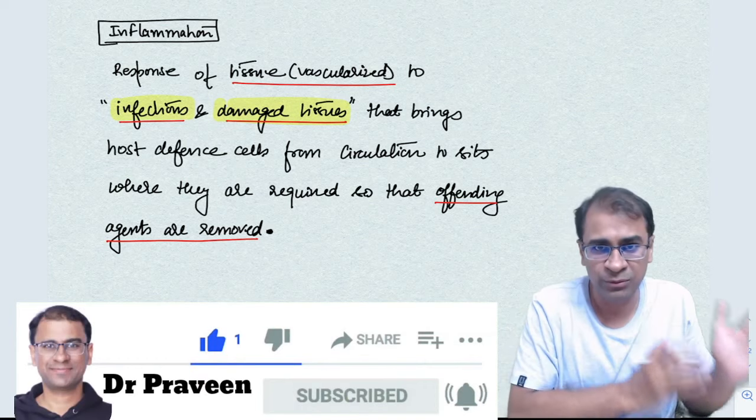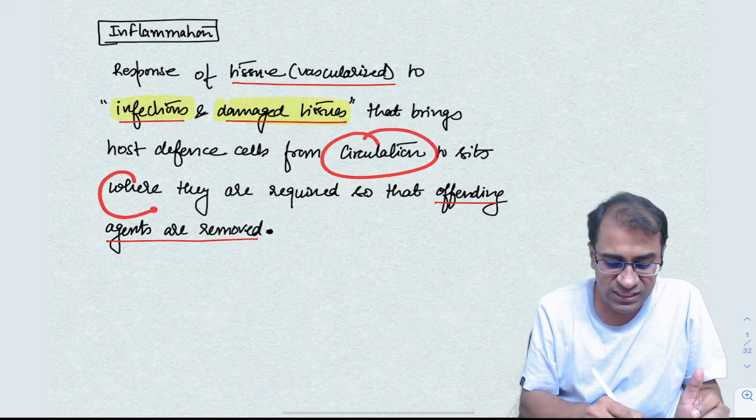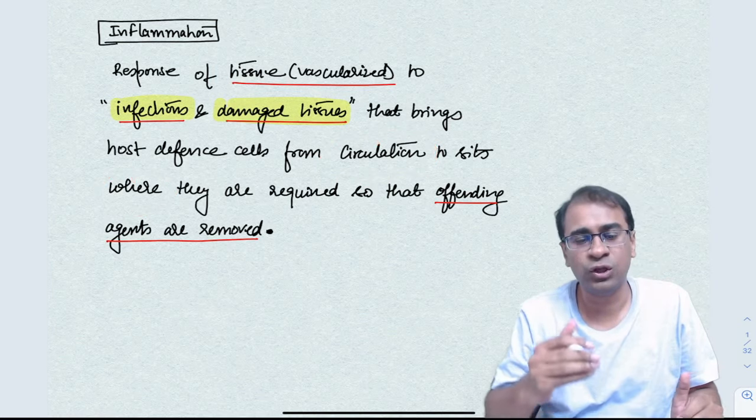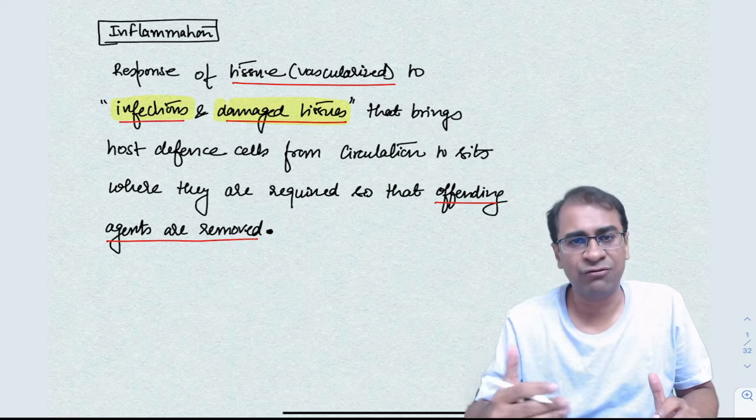First of all, let's talk about the definition. It basically is a movement of any immune cell from the circulation to the sites where they're required to remove the offending agents. The offending agents can be an antigen in the form of infections.